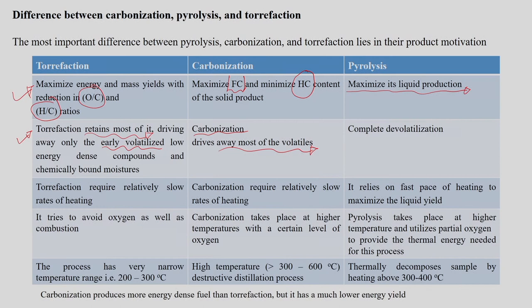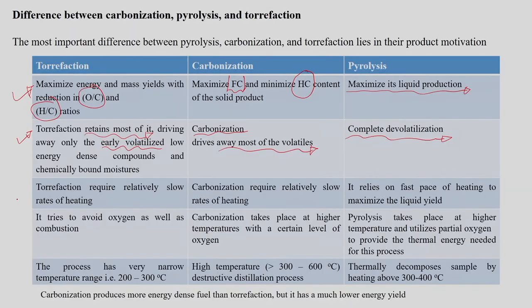Pyrolysis is a complete devolatilization process. Torrefaction and carbonization both require relatively slow heating rates to obtain the solid product, whereas pyrolysis requires fast-pace heating of the material to achieve maximum liquid yield. Torrefaction tries to avoid oxygen as well as combustion during the process, whereas carbonization takes place at higher temperature with a certain level of oxygen, and pyrolysis takes place at higher temperature utilizing partial oxygen to supply the energy required for the process.